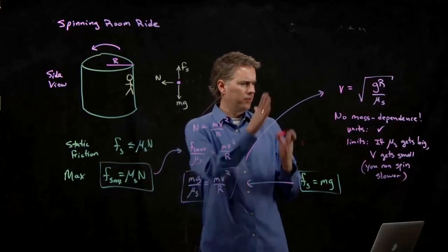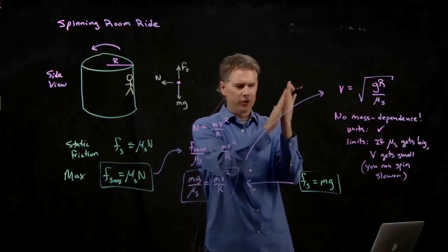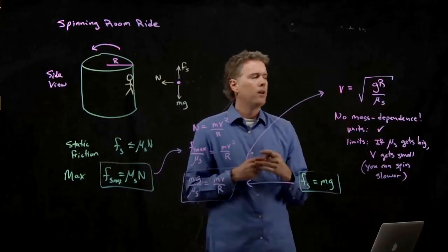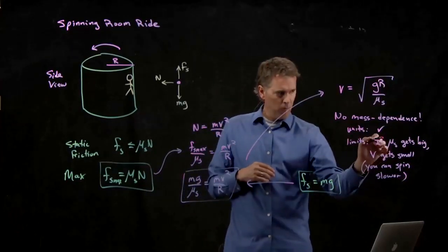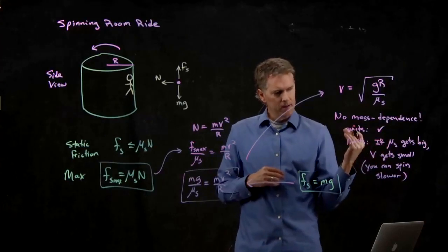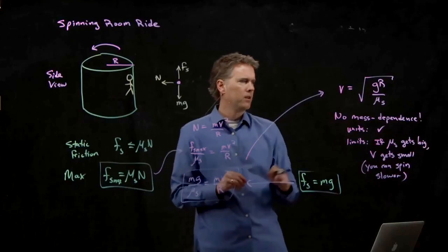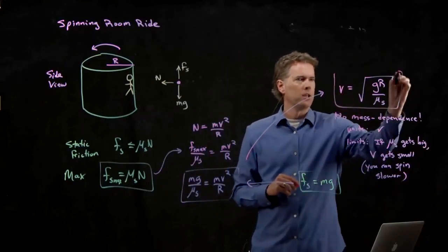The whole room can spin slower, which makes sense, right? We talked about this initially. If it's a very slippery wall, that friction is not going to hold you up very well. So you have to spin around much faster. But if it's a very sticky wall where mu S gets big, then you can spin the room around much more slowly. Okay. So that looks like a good answer.